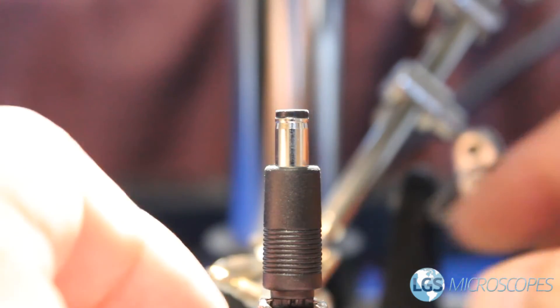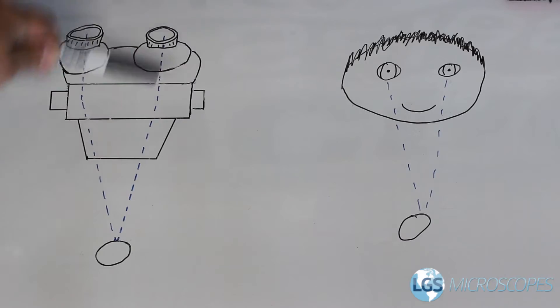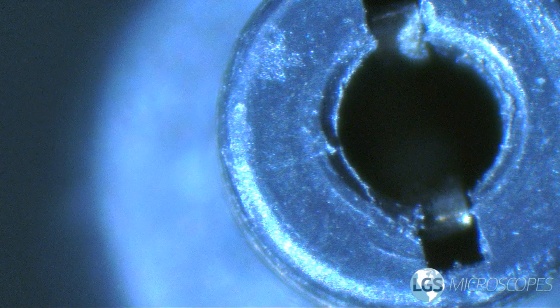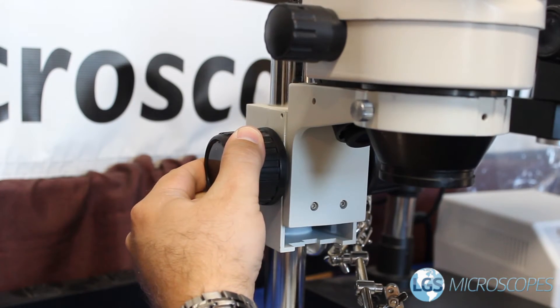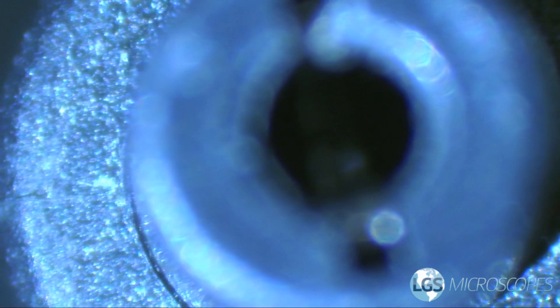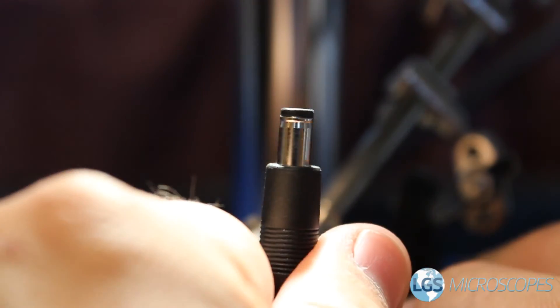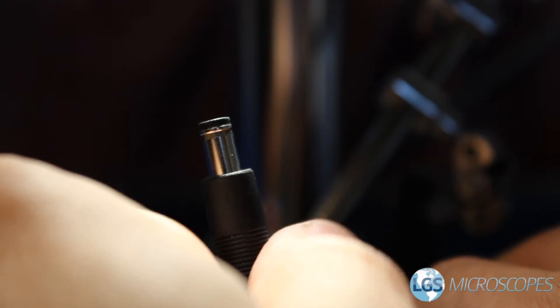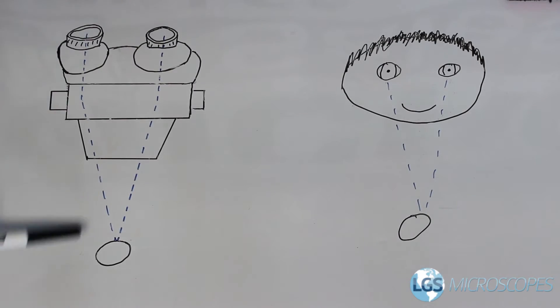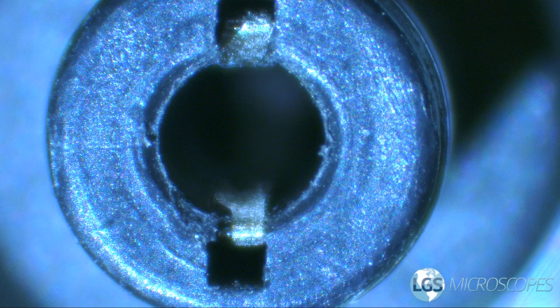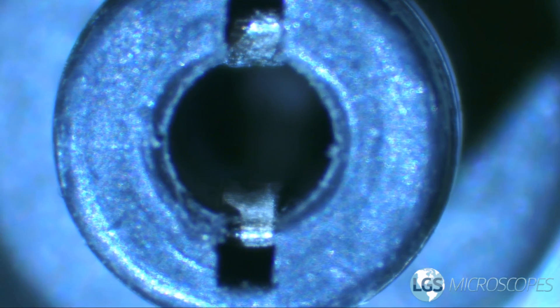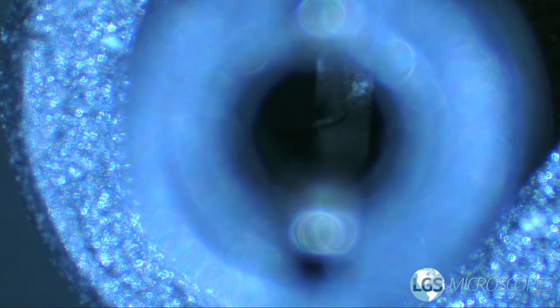If we tilt the part to the right so that it's lined up with the light path going to our right eyepiece, suddenly we can see straight down the tube. If we adjust the focus slowly, we can see our focal point move from the top of the tube all the way down to the connector at the bottom. The same is true if we tilt the part to the left slightly — from our left eyepiece it appears straight up and down, and we can see straight down to the bottom. Again, if we slowly move the focus, we can see our focal point move from the top of the tube all the way to the connection at the bottom.